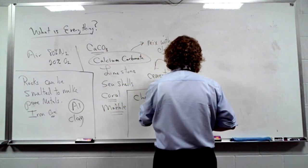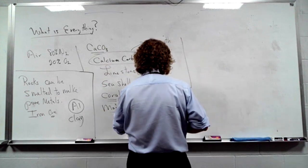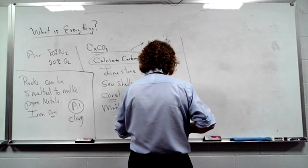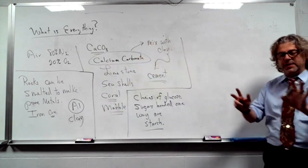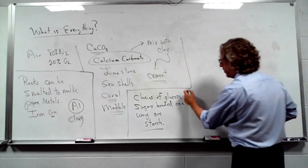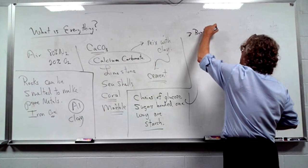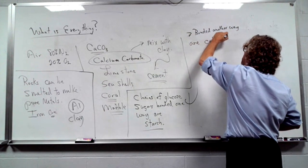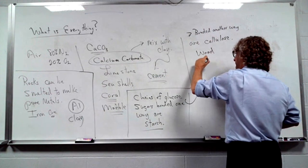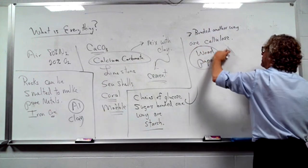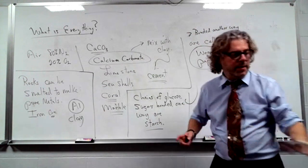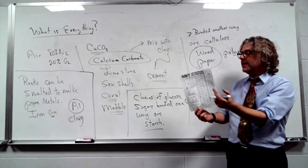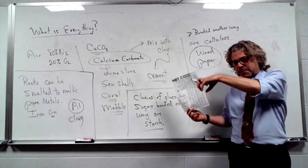Chains of glucose sugars bonded one way are starch. Chains of glucose sugars bonded another way are cellulose — so wood and paper. These are polar. How do you know paper is polar? If I take a sheet of paper and put it in water, the water runs up. If it were non-polar, the water would stay away — like when you wax your car with non-polar wax and water beads up.